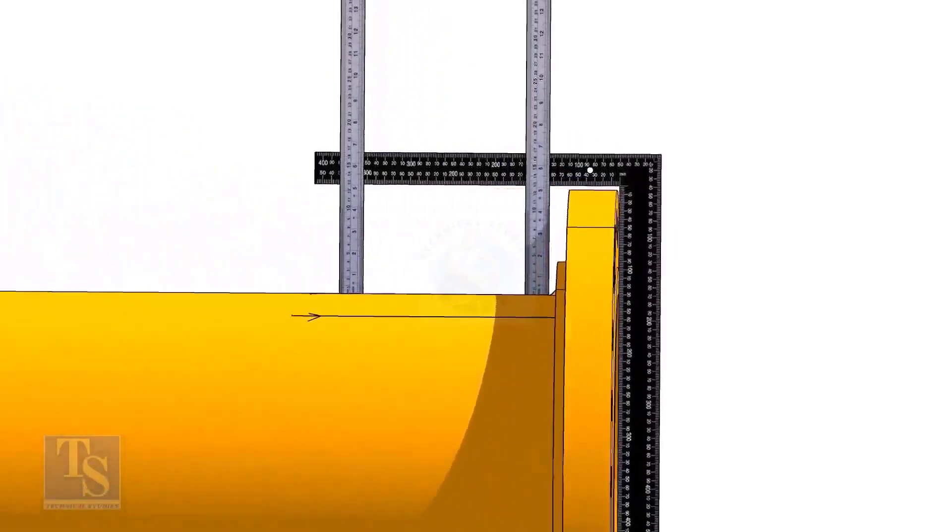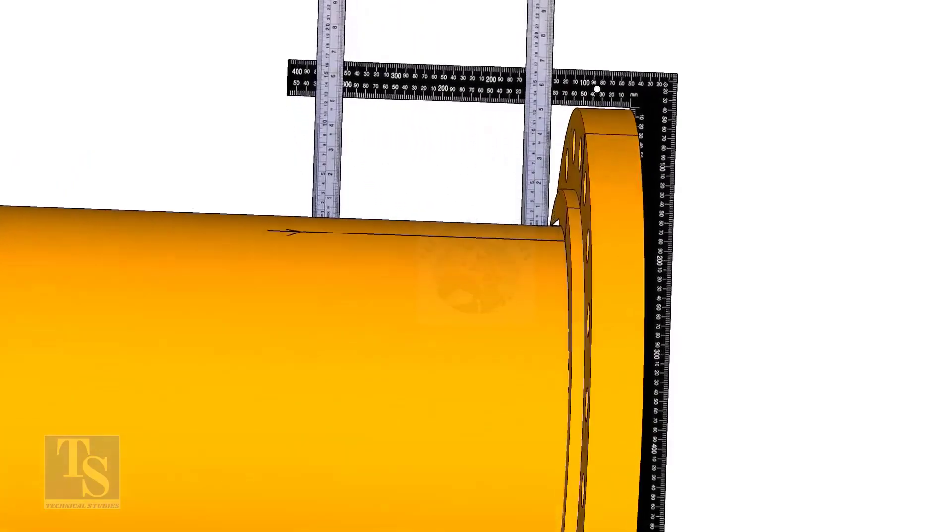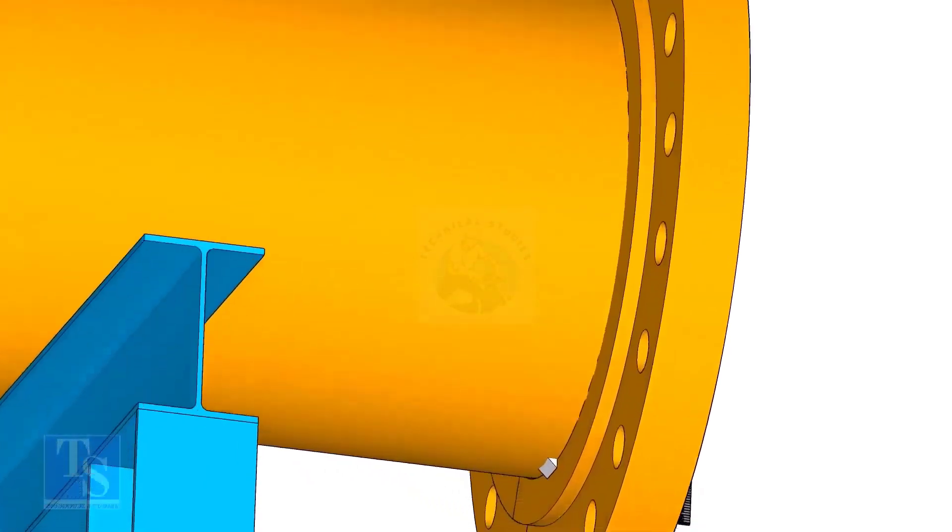Tack weld on the top of the pipe with the flange and check the squareness. If correct, tack weld at the bottom side also.